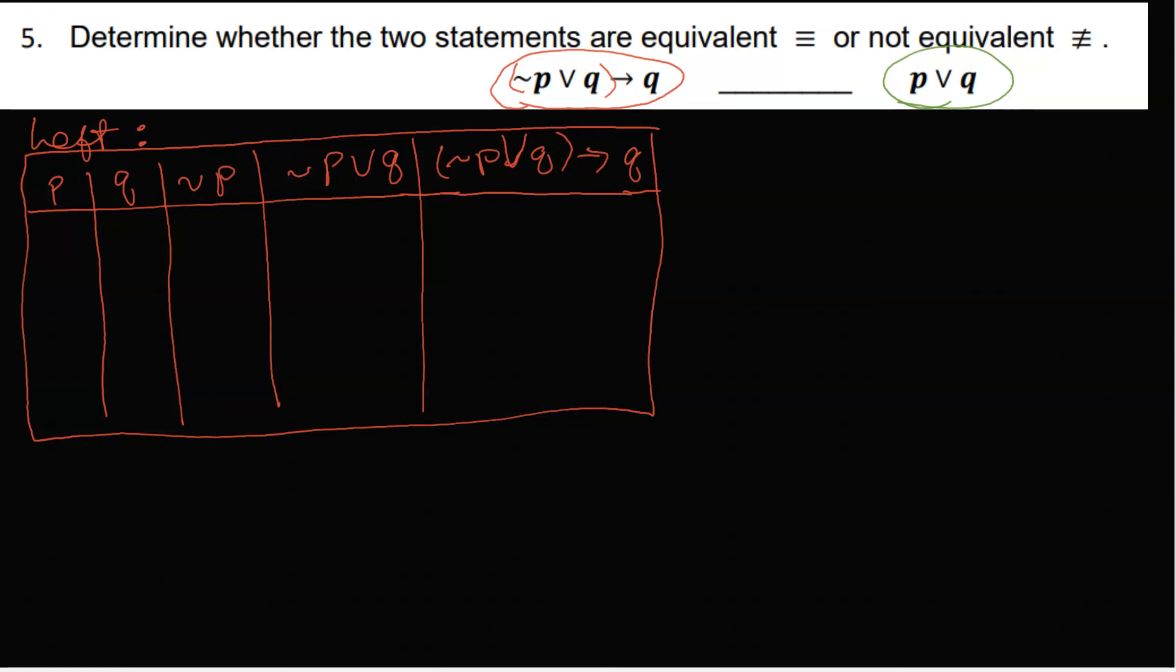So here we have the values of true true, true false, false true, and then false false. Not P means the opposite of P, so we will have false false true true.